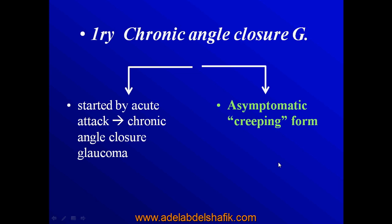We know that chronic angle closure glaucoma may follow an acute attack, and this is easy to diagnose. But there is another form of chronic angle closure glaucoma that has no symptoms at all — it has a creeping closure of the angle and the clinical picture is quite similar to open angle glaucoma. There are no symptoms at all, so the only way to diagnose such a condition is to do gonioscopy.